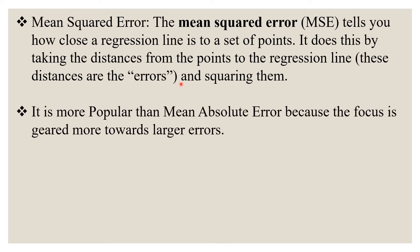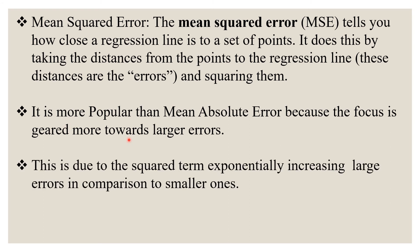It is more popular than mean absolute error because the focus is more geared towards larger errors. This is due to the squared term exponentially increasing large errors in comparison to smaller ones. The formula for mean squared error is given by MSE equals 1 upon n summation i equals 1 to n, yi minus y hat squared, where yi is nothing but your actual values and y hat is nothing but your predicted values.